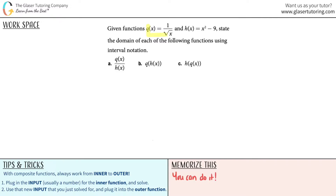Given functions q of x equals 1 over the square root of x, and h of x equals x squared minus 9, we want to state the domain of each of the following functions using interval notation. They give us three separate functions. For the first one, it looks like we're just dividing two functions — the q function and the h function.